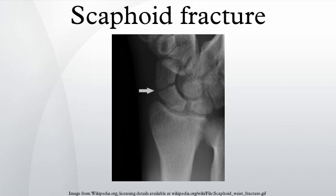Treatment depends on the location of the fracture. Fractures of the scaphoid can occur either with direct axial compression or with hyperextension of the wrist, such as a fall on the palm on an outstretched hand.